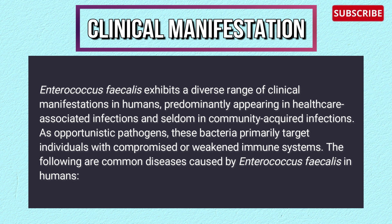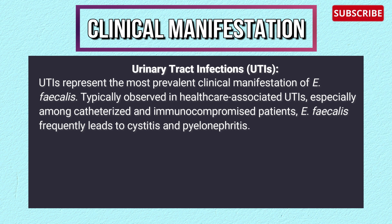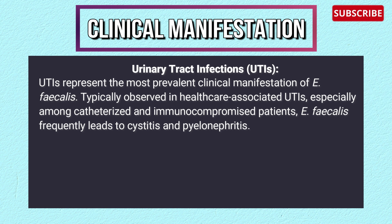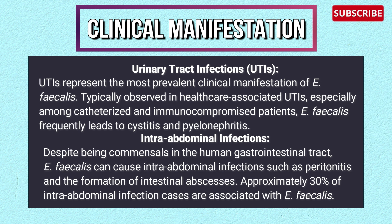Clinical manifestations of Enterococcus faecalis: it exhibits a diverse range of clinical manifestations, predominantly in healthcare-associated infections and seldom in community-acquired infections. As an opportunistic pathogen, it primarily targets immunocompromised individuals. Urinary tract infections (UTIs) are the most prevalent manifestation, especially among catheterized patients, frequently causing cystitis and pyelonephritis. Despite being a commensal in the gastrointestinal tract, it can also cause intra-abdominal infections such as peritonitis and intestinal abscesses; approximately 30% of intra-abdominal infections are associated with Enterococcus faecalis.